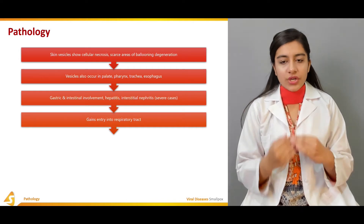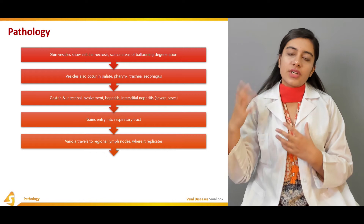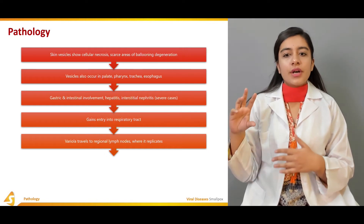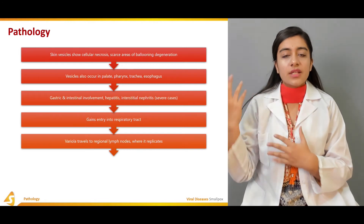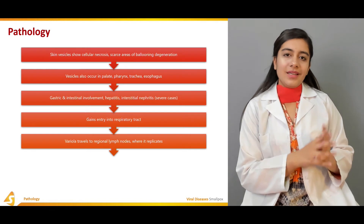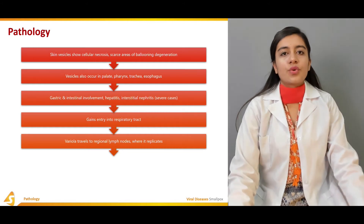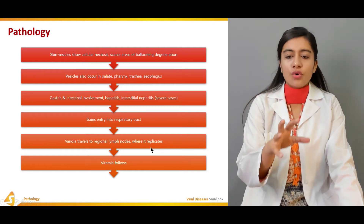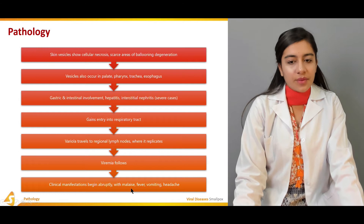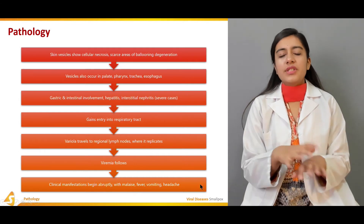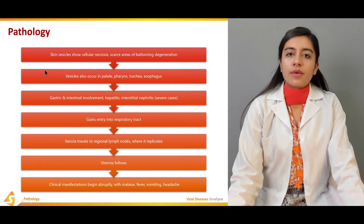The variola virus gains entry through the respiratory tract, then travels to the lymph nodes where it begins to replicate. From the lymph nodes it transfers into the blood — known as viremia. After replication in the lymph nodes, viremia follows and clinical manifestations begin abruptly with malaise, fever, vomiting, headaches, and eruption of papules on the skin.